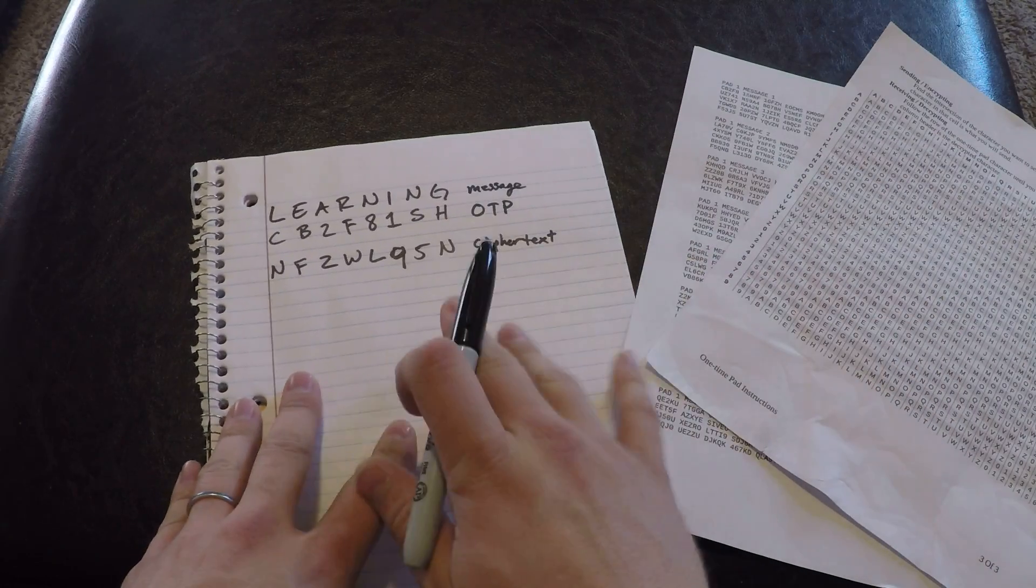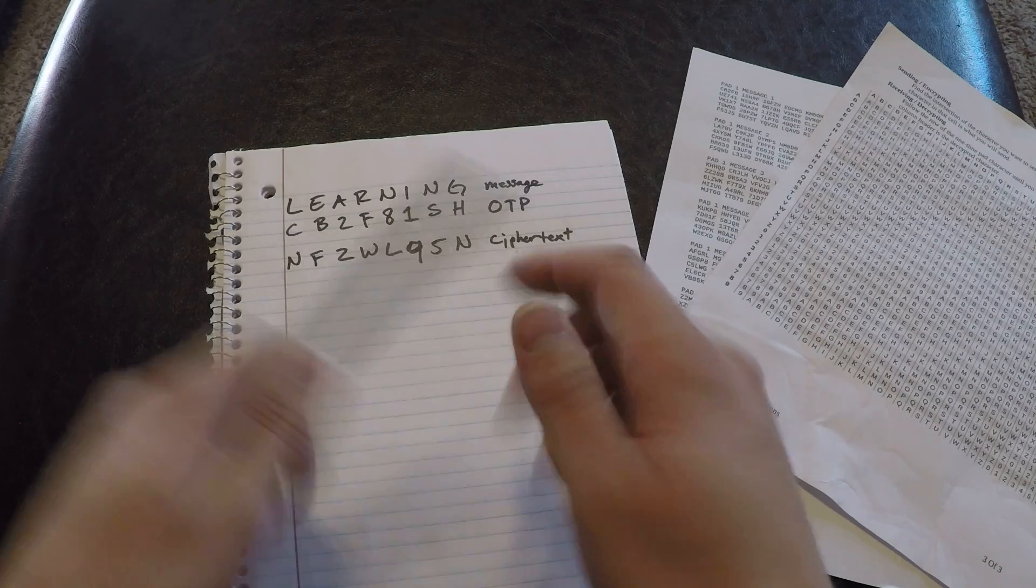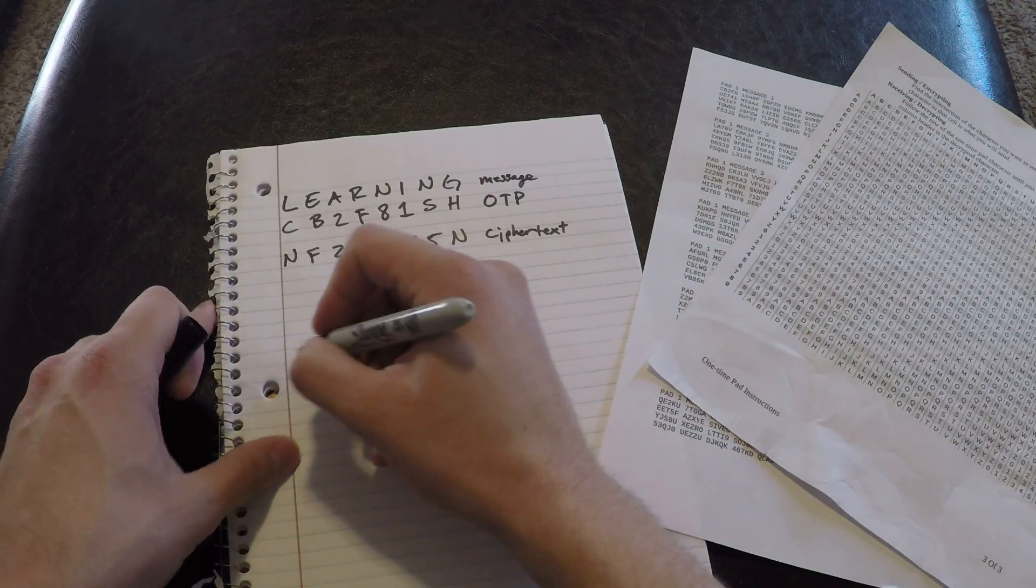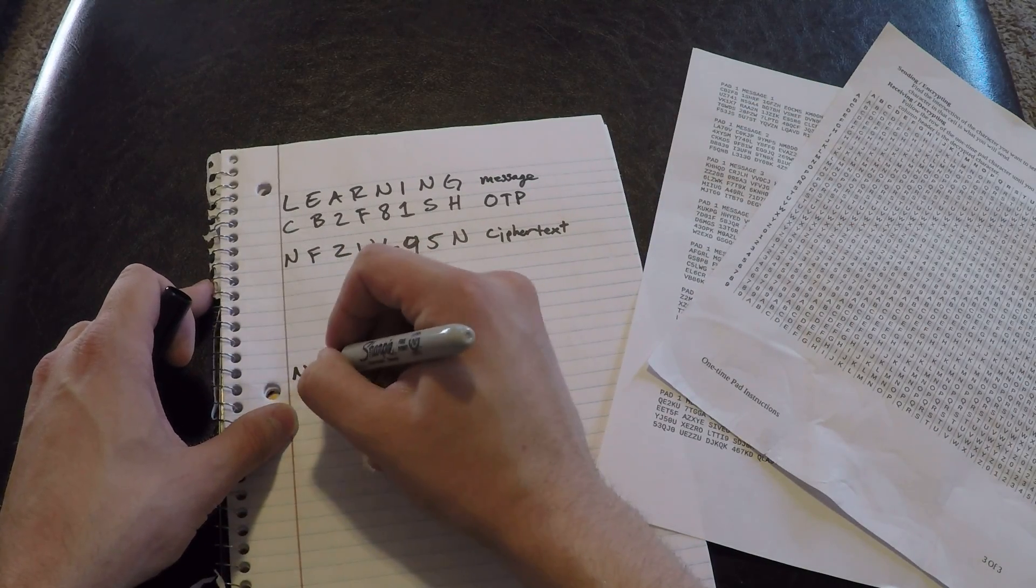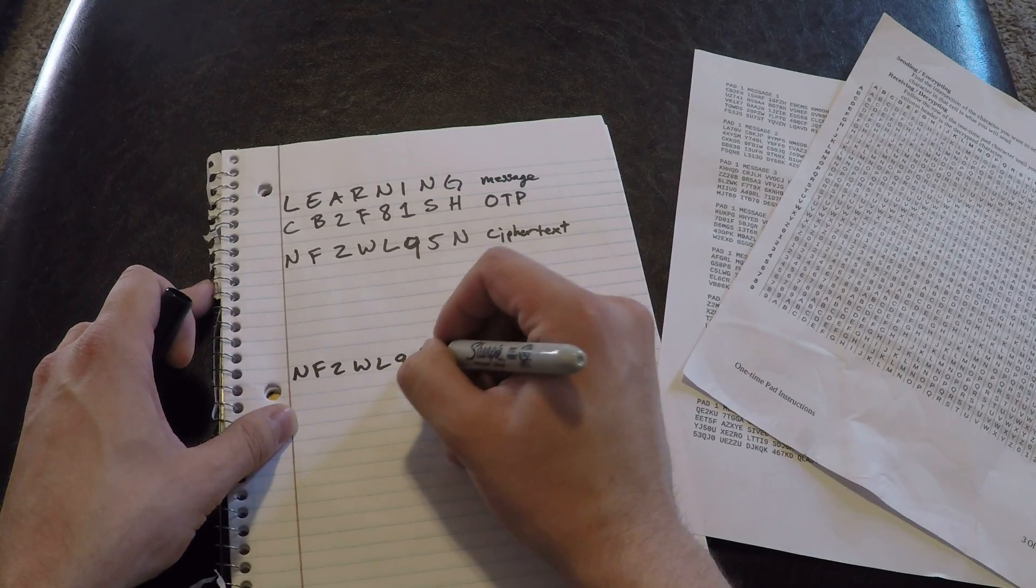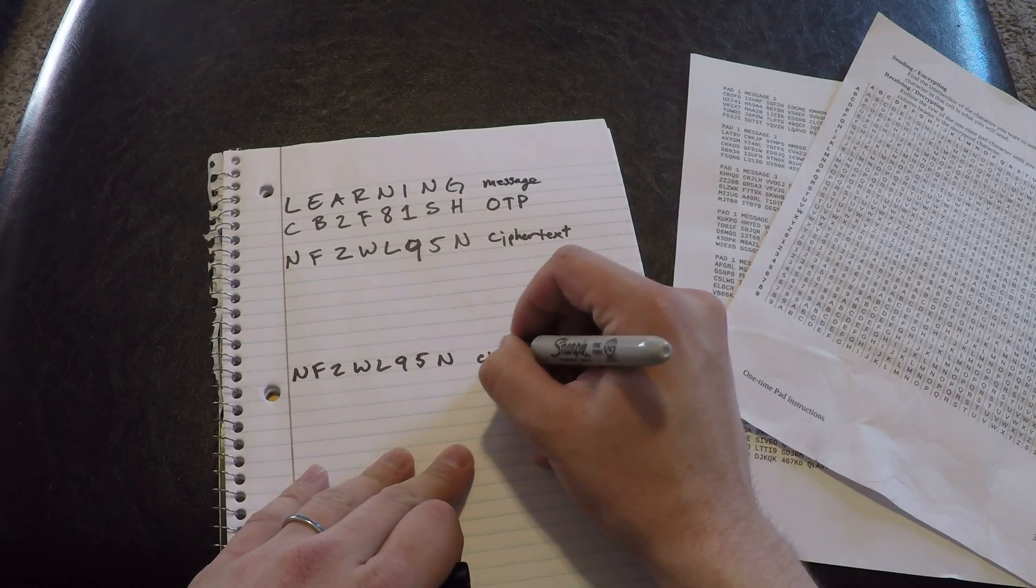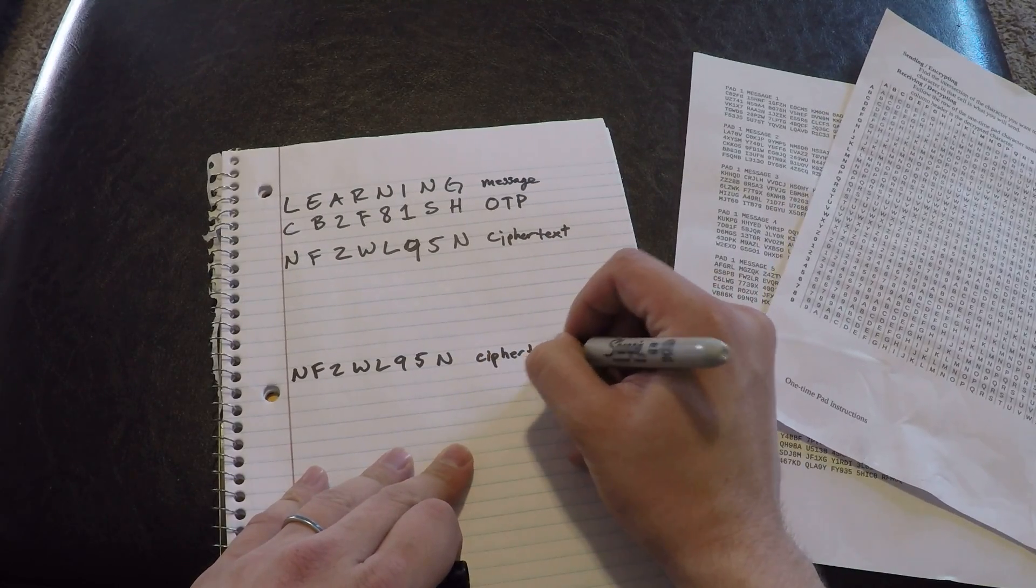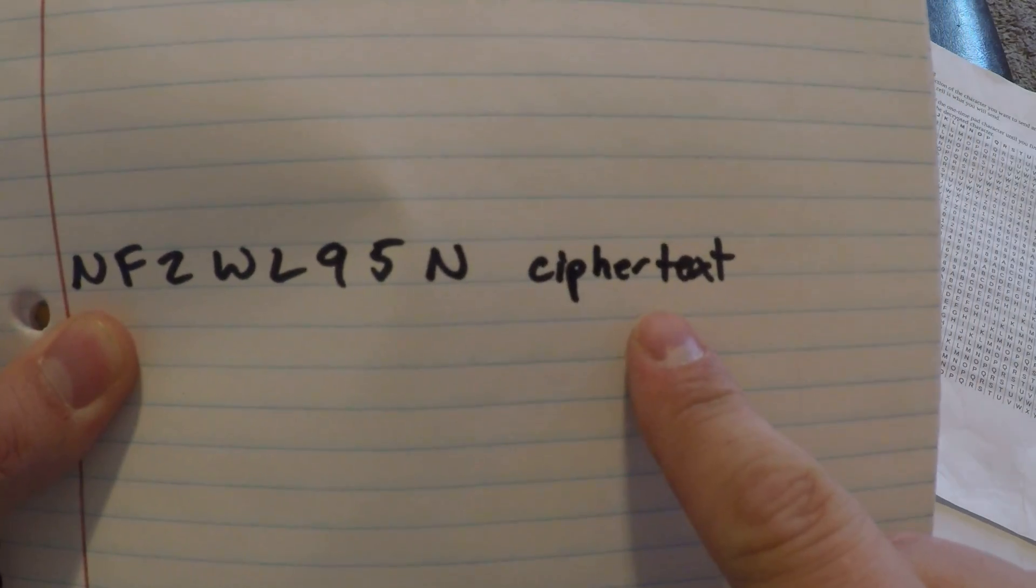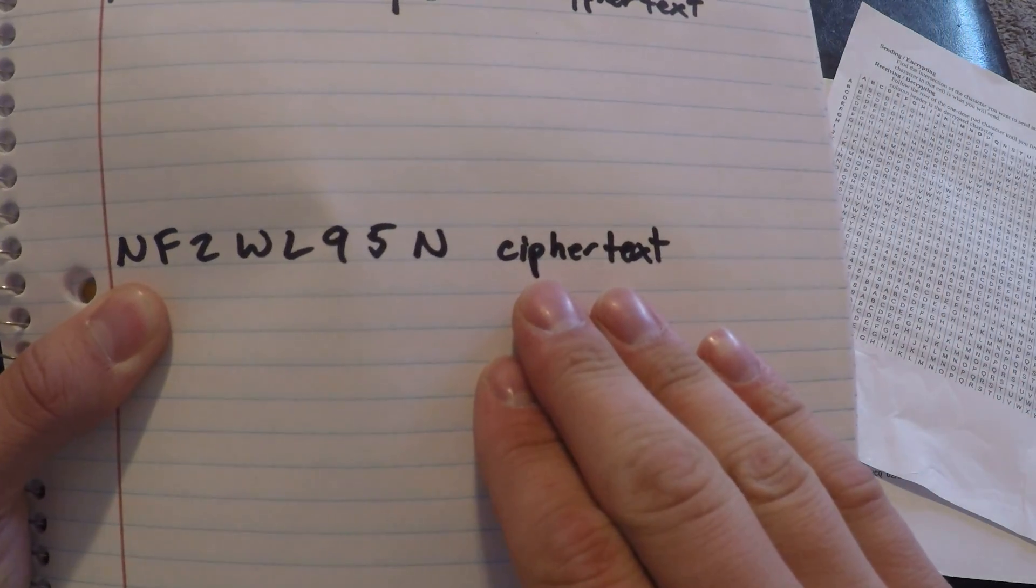Now, we're going to pretend to be the other side of this, and we're going to decrypt this message, which is just as simple. So we receive this message, and let's decrypt it. N, F, 2, W, L, 9, 5, N. And this is our ciphertext. That's just a fancy way of saying the encrypted message.